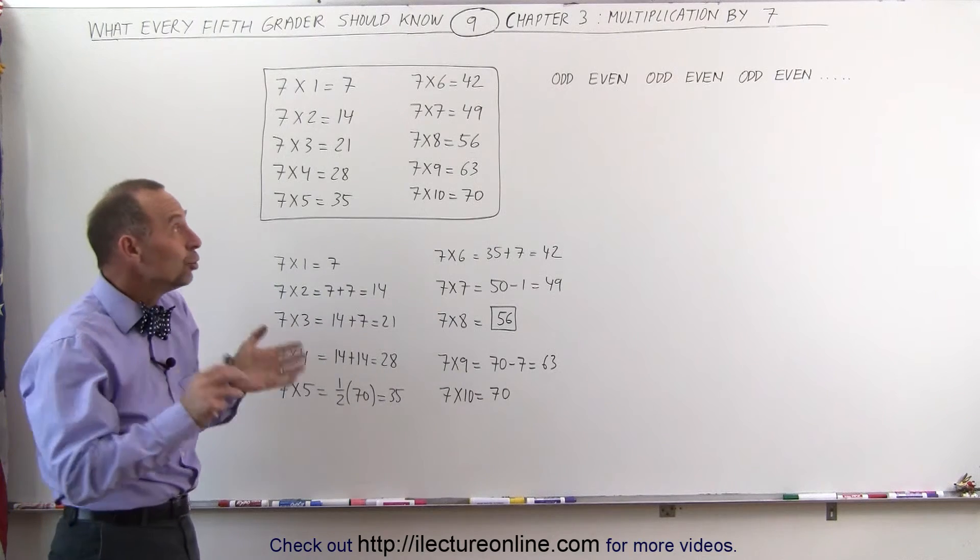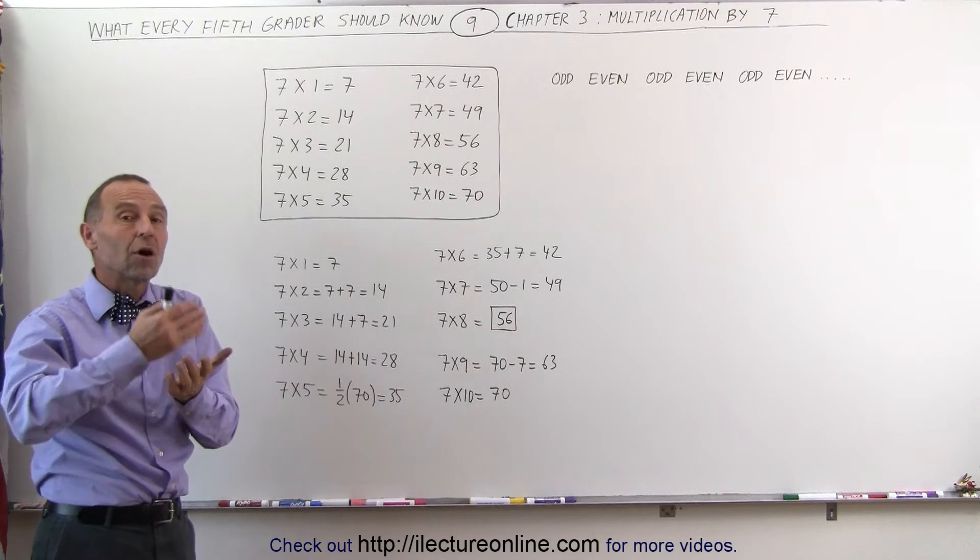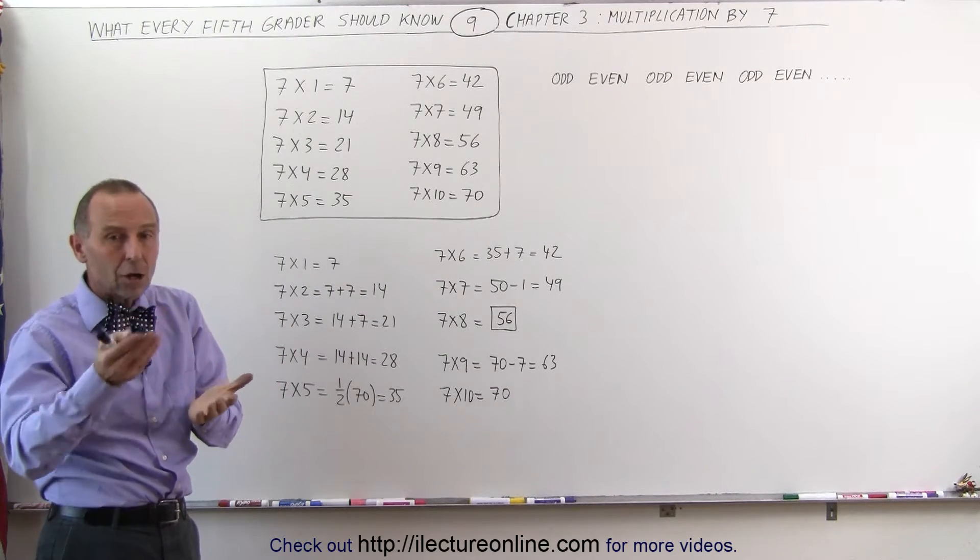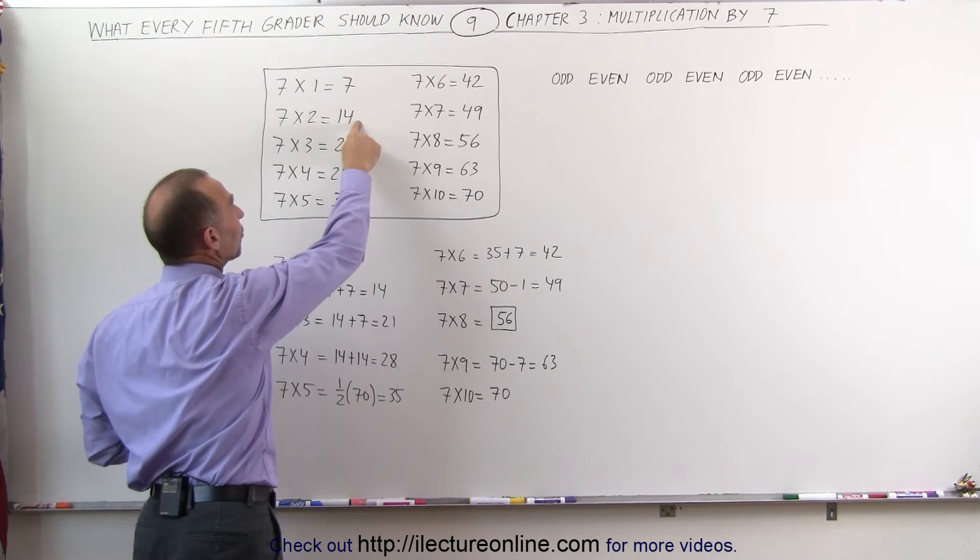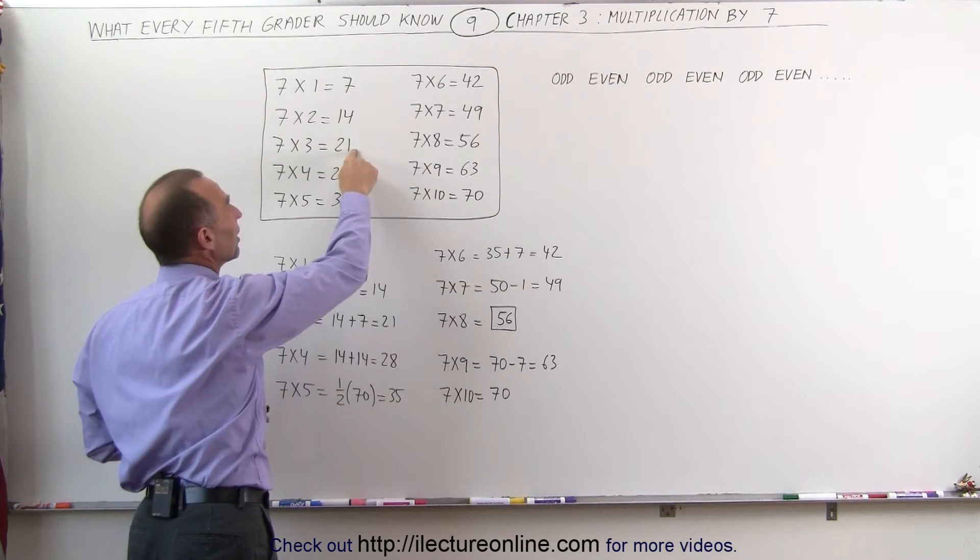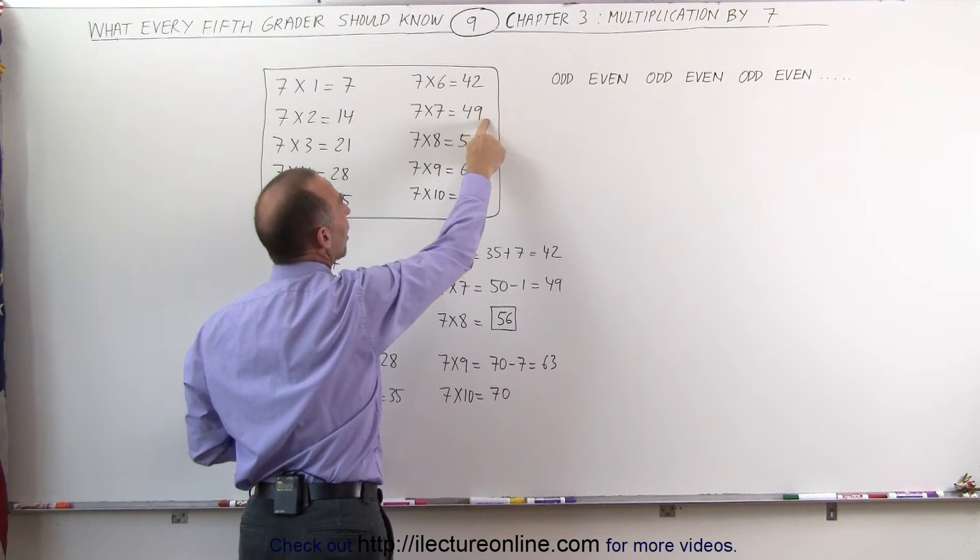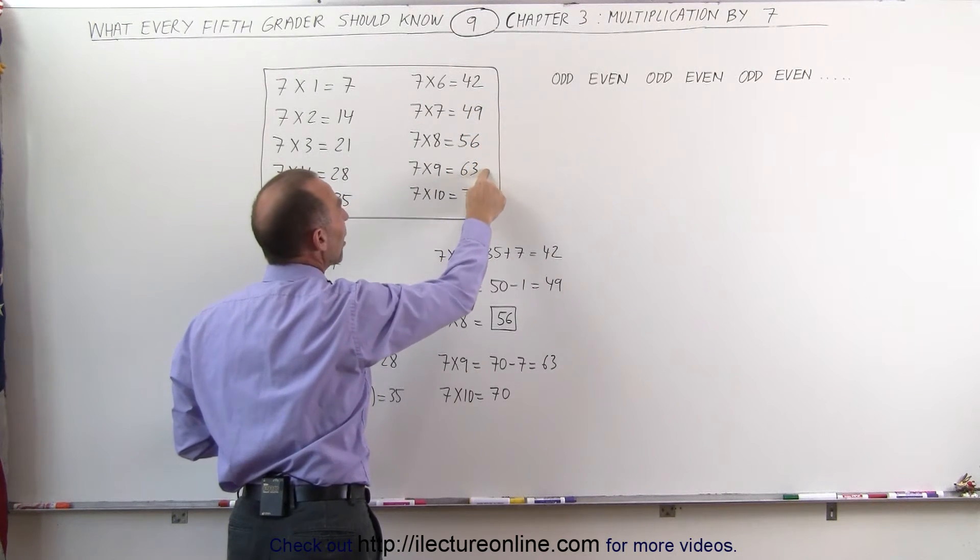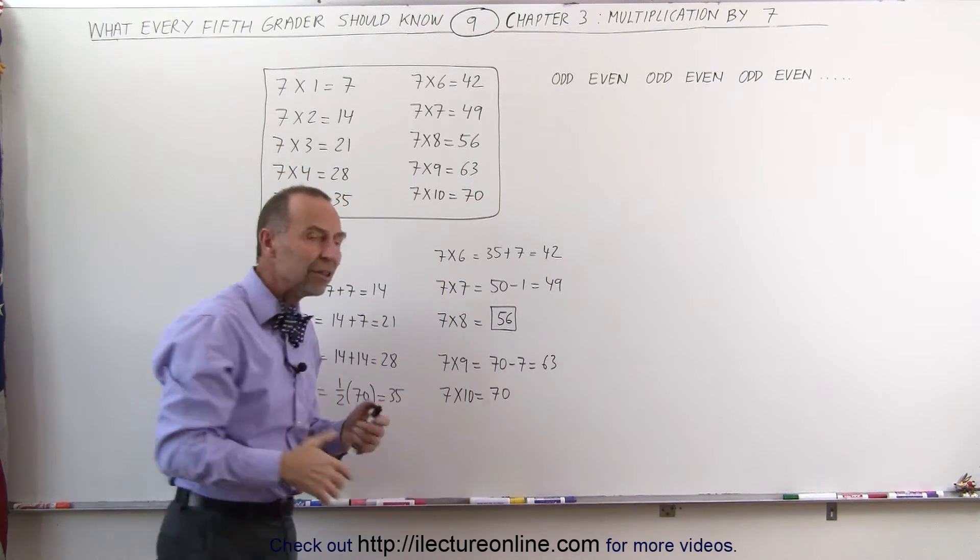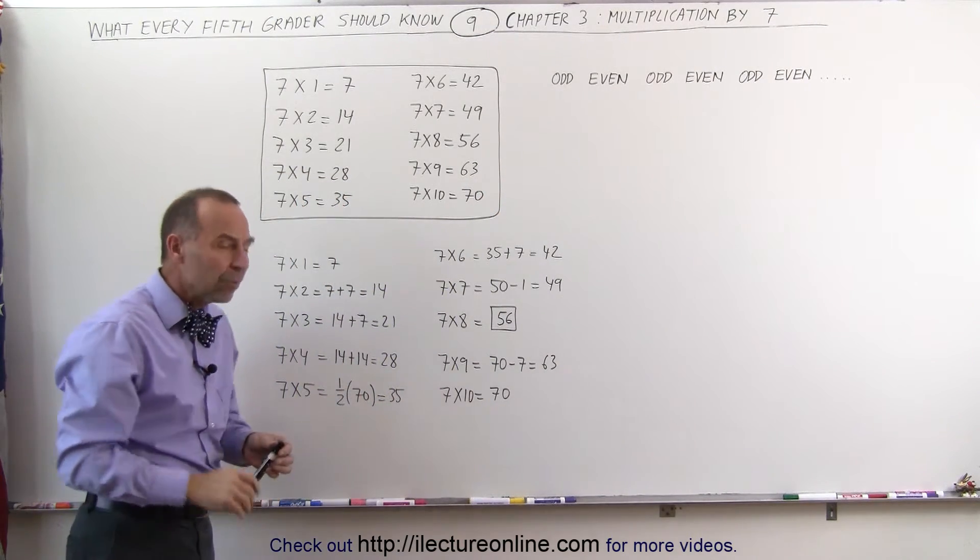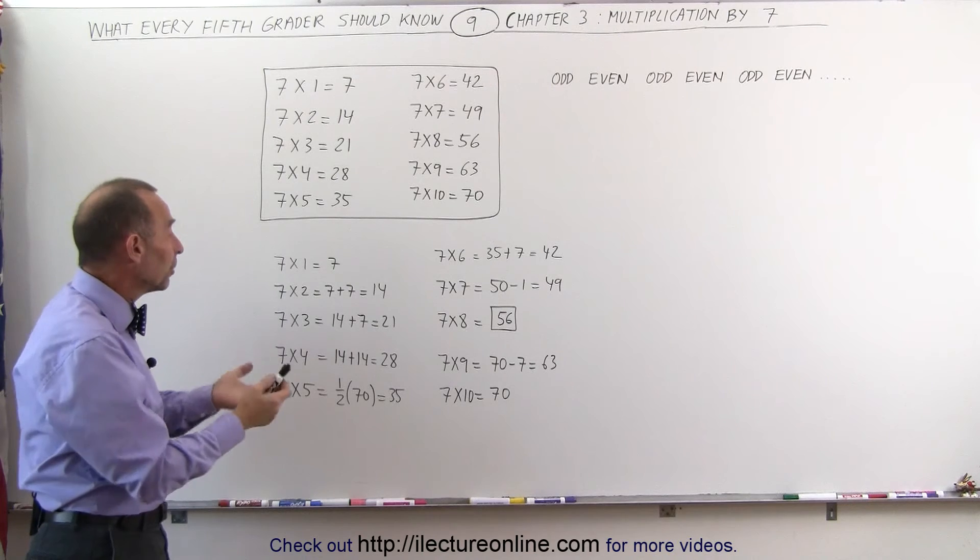One pattern that I notice is that the answers are either odd or even, and they alternate. The first answer is odd, the next answer is even, and this pattern continues throughout. So that does help us a little bit. Now, some other tricks that we can use to try and multiply by 7.